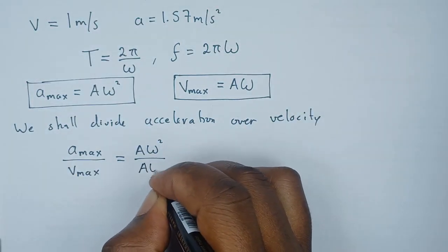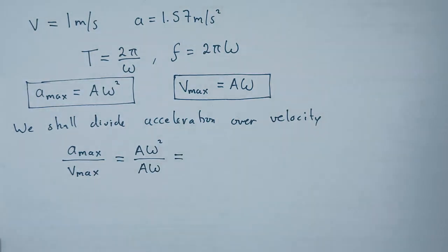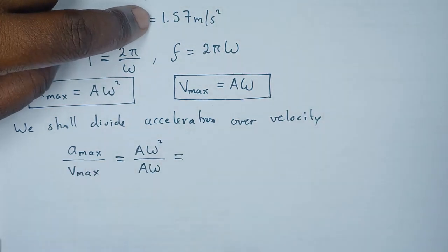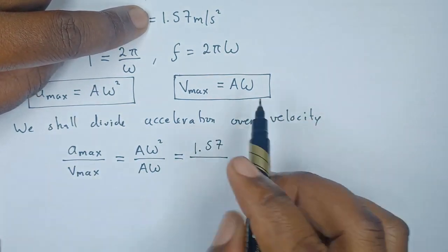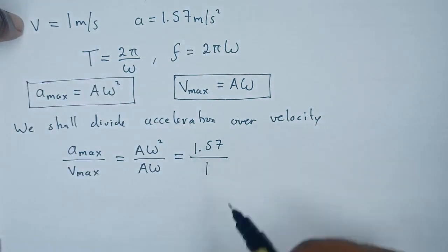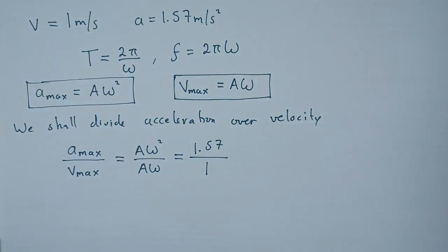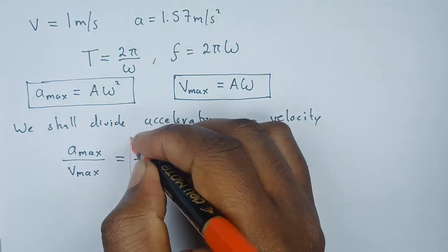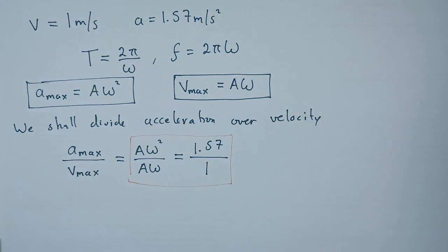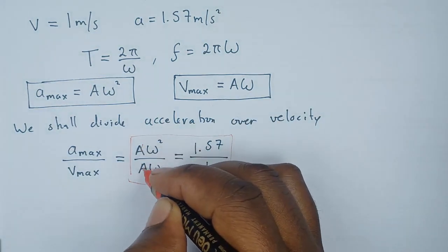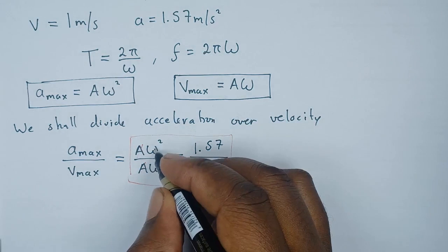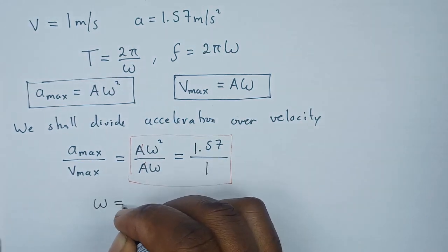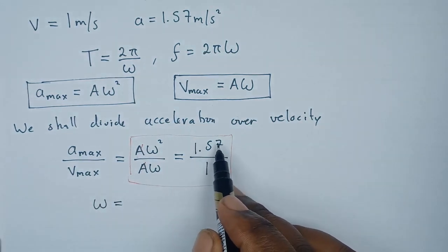Now remember that acceleration was given to be 1.57, and velocity we had 1. So if you look at this relationship we've created here, it's obvious that we can form this equation. The amplitude will cancel out, omega will also cancel out, meaning we're only remaining with ω here. So ω equals 1.57 over 1, which gives us ω = 1.57 radians per second.